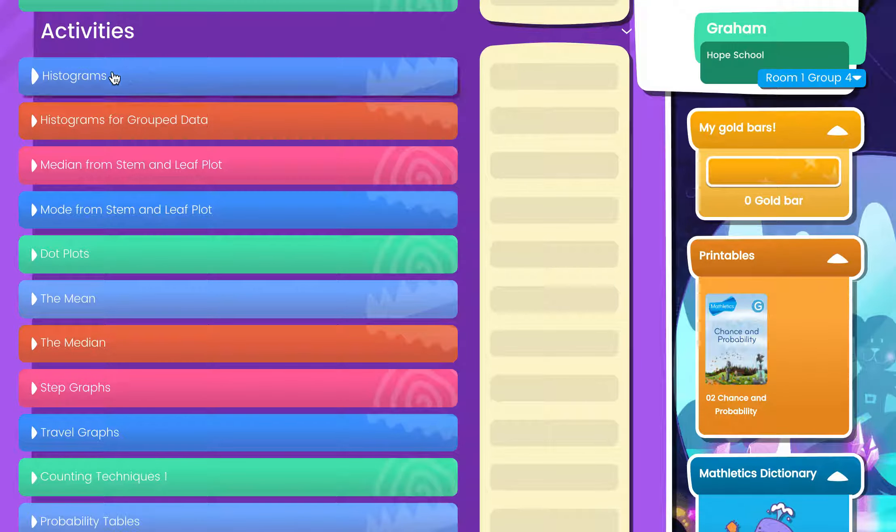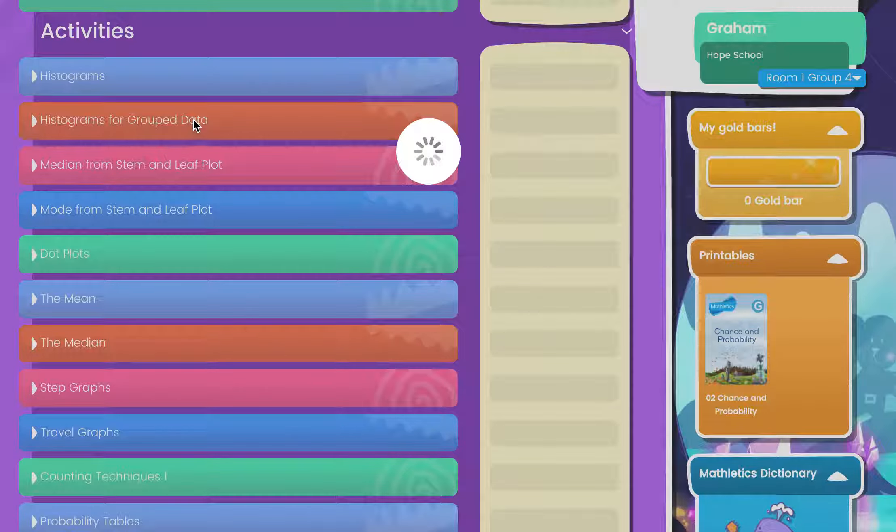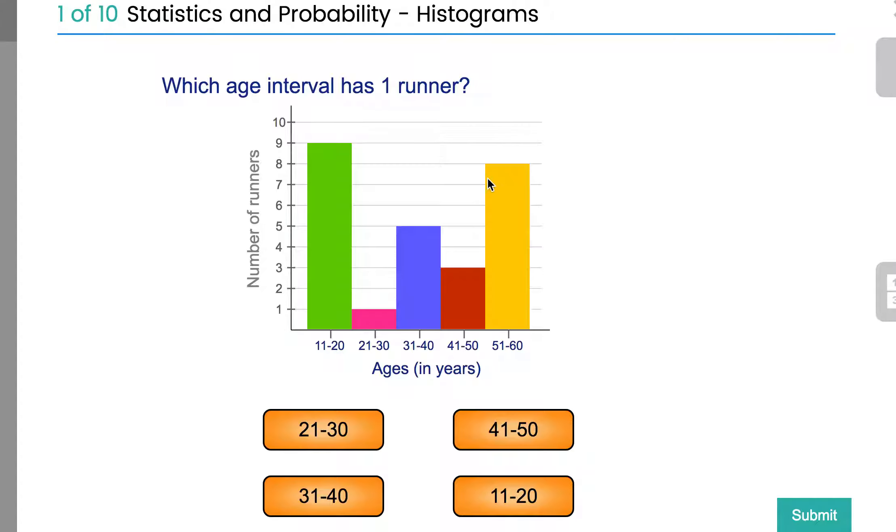This video is for histograms. Histograms are a type of graph, and you can see they generally display information across ranges of ages and those sorts of things.